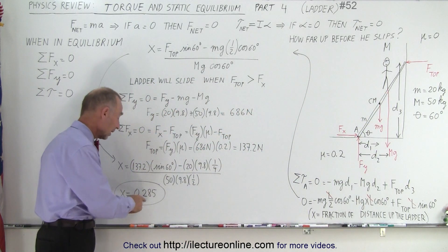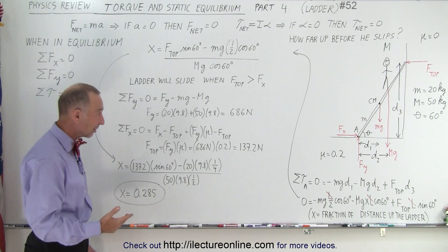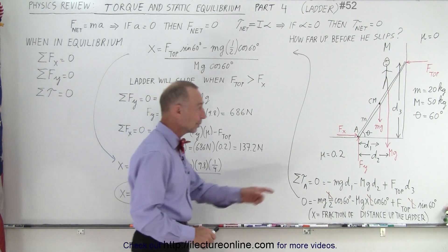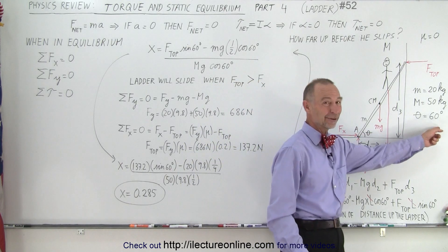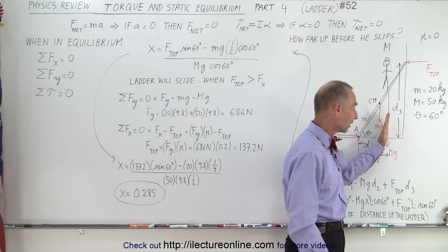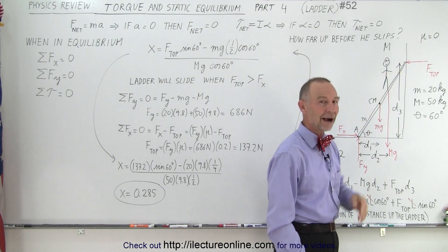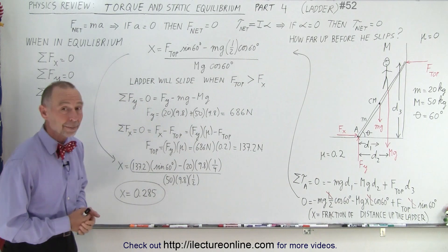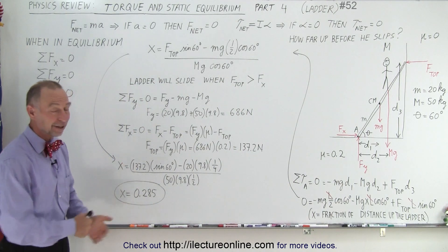Now you may say well if you can only get up about 28.5 percent of the total distance of the ladder that's not a very good thing and that's because we picked the angle to be 60 degrees which of course is not a good angle for a ladder. If you change the angle you probably can go up higher up the ladder but at least it gives you a flavor of how to do this type of problem and that is how it's done.